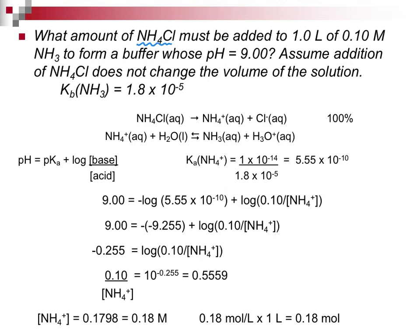It says, what amount of my salt, which is really the acid component, do I have to add to 0.1 molar ammonia, which is my base, to get a buffer with a pH equal to 9? And we'll assume that adding the solid doesn't change the volume of the solution. We can find this in a table.